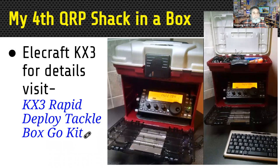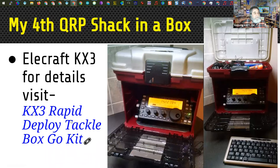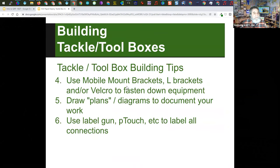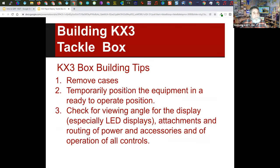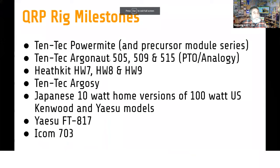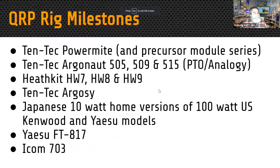When the KX3 came out I built a go box in a plain old tackle box — the front panel snaps off and it's very easy to operate: open the top, turn it on, and I'm ready to operate. I have a lithium iron battery in the top and other accessories. This is my rapid deploy tackle box — the link in the slideshow takes you to a presentation on the KX3 rapid deploy tackle box and how I built it.